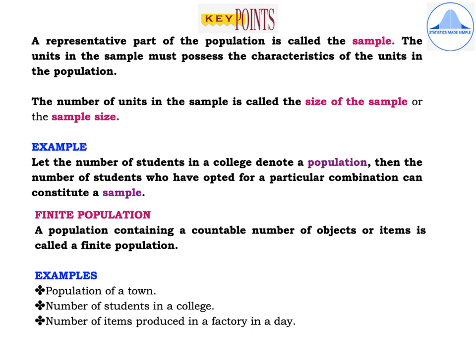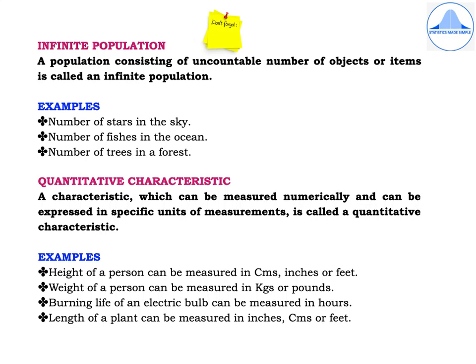A finite population is one containing a countable number of objects or items. Examples include the population of a town, the number of students in a college, and the number of items produced in a factory in a day. An infinite population consists of an uncountable number of objects or items. Examples include the number of stars in the sky, the number of fishes in the ocean, and the number of trees in a forest.